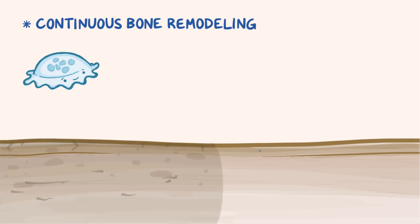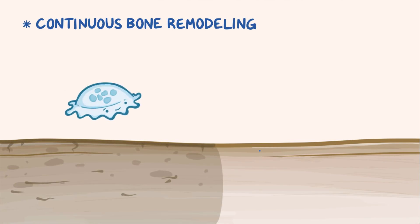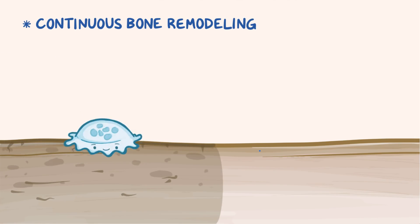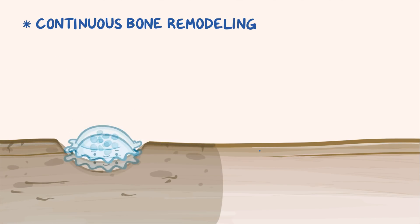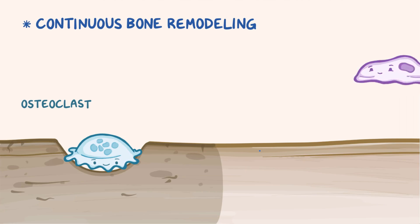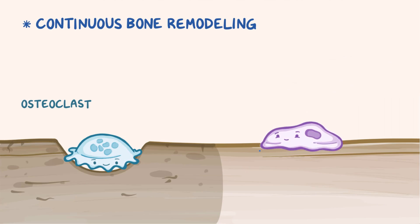Normally, bones undergo a continuous process of remodeling. Old brittle bone tissue gets reabsorbed by multinucleated bone cells called osteoclasts, which have 5-20 nuclei per cell. The resorbed bone tissue gets replaced by a new one made by another type of bone cell called an osteoblast.